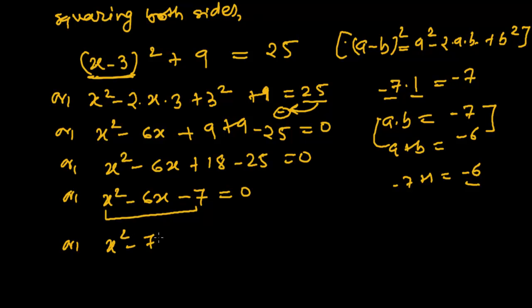Or, x² - 7x + x. Or you can say simply 1x also. Sorry, it's minus 7, -7 equals to 0. So minus 6, I can also write like this. -7x + 1x. So in this place, I have written this. So in the place of -6x, I can write like this. -7x + 1x - 7 = 0.